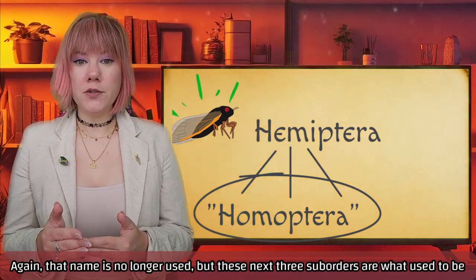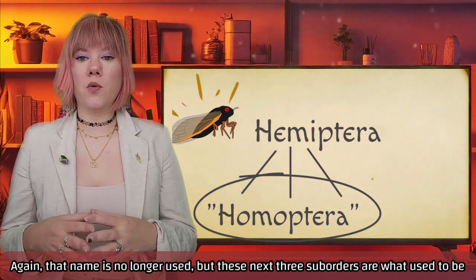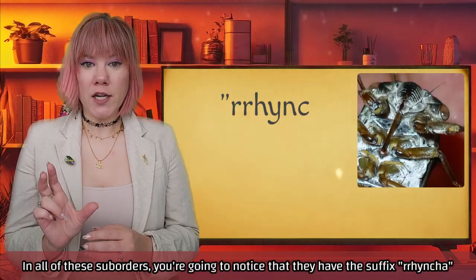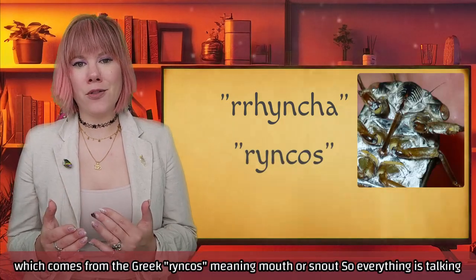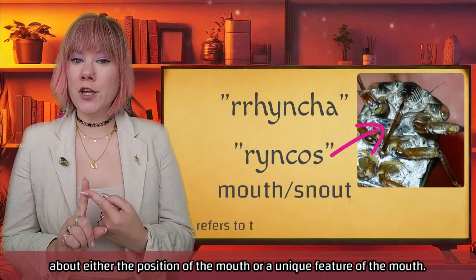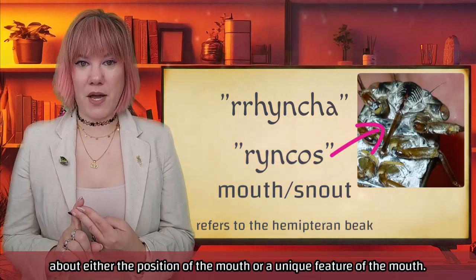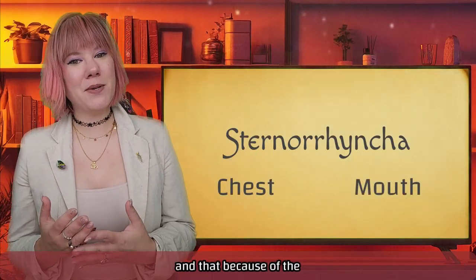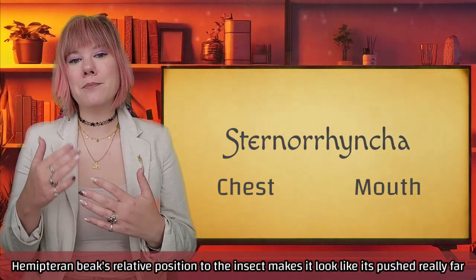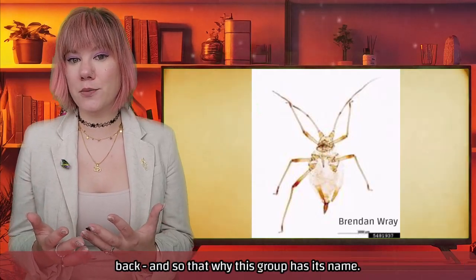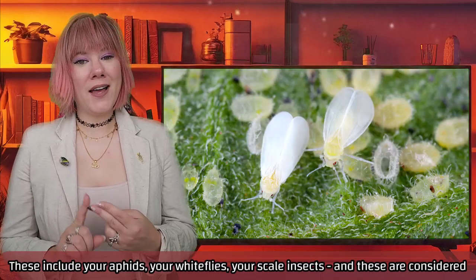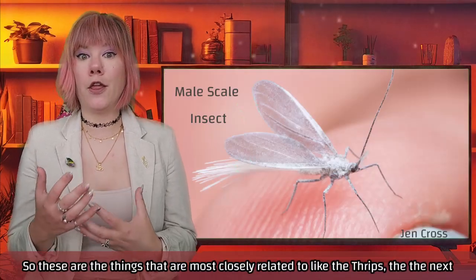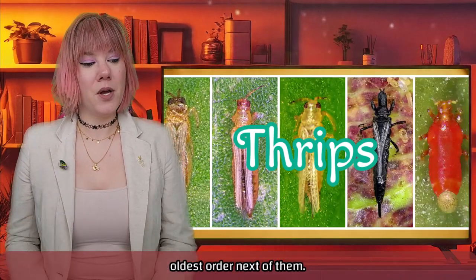To start with the sub-orders, I'm going to talk about what used to be categorized as Homoptera first — that name is no longer used, but these next three sub-orders are what used to be called old Homoptera. In all of these sub-orders you'll notice the suffix '-ryncha,' which comes from the Greek 'rhynkos' meaning mouth or snout, so everything is referencing either the position of the mouth or a unique feature of the mouth. The first is Sternorrhyncha: sterno meaning chest, ryncha meaning mouth or snout — because the Hemipteran beak's relative position makes it look pushed really far back. These include your aphids, your whiteflies, your scale insects, and these are considered to be the most basal of the Hemiptera, most closely related to thrips.